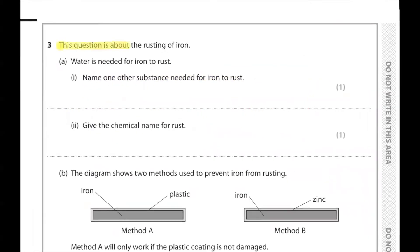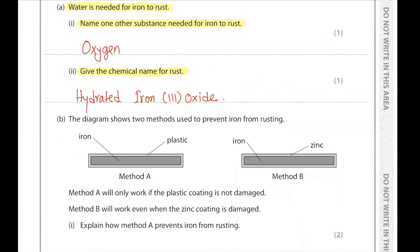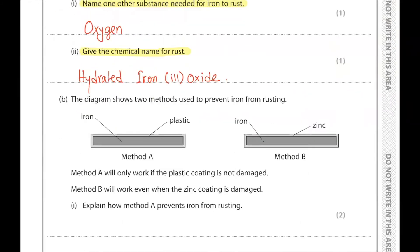Question number three is about the rusting of iron. Water is needed for iron to rust — name one other substance needed. The answer is oxygen. Give the chemical name for rust: rust is hydrated iron(III) oxide. This is something you must memorize — it is always iron(III) oxide, never iron(II) oxide. Even if you forget to write 'hydrated' you may still get the mark, but if you forget to write iron(III) oxide you will lose the mark.